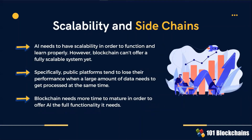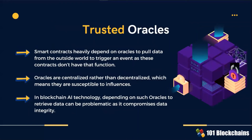Artificial intelligence needs scalability to function and learn properly. Blockchain still can't offer a fully scalable system as of yet, and needs more time to mature in order to offer AI the full functionality it needs. Smart contracts heavily depend on oracles to pull data from the outside world, meaning oracles are susceptible to influences, which can be problematic if not properly designed.